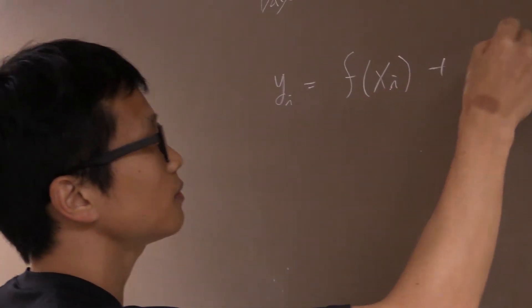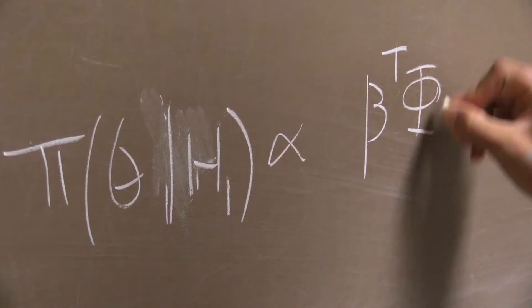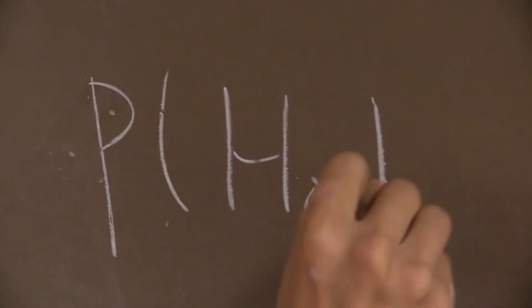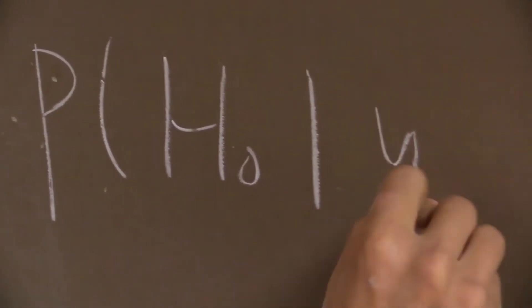I like that, especially in Bayesian statistics. Everything in Bayesian statistics can be explained by one single theorem — Bayes' theorem. So I found that it's kind of beautiful, and also it has very strong coherence.